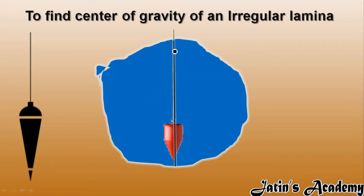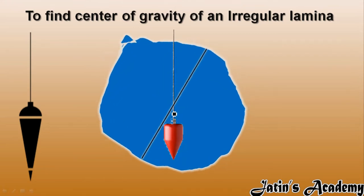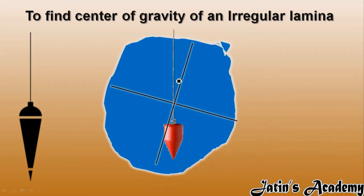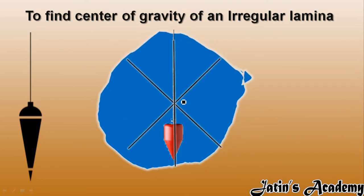This is the first line I have drawn. Now rotate this irregular body. After rotating, again draw one line. Again rotate this, and after rotating again draw one line. So the intersection of these lines on the irregular body will give us the center of gravity of the irregular lamina.